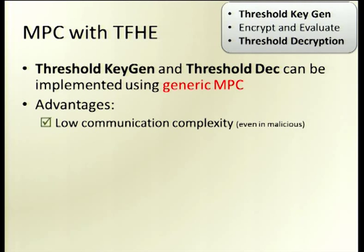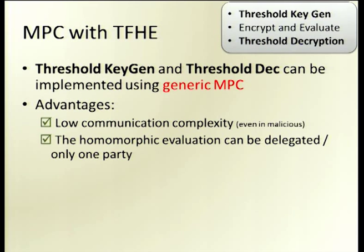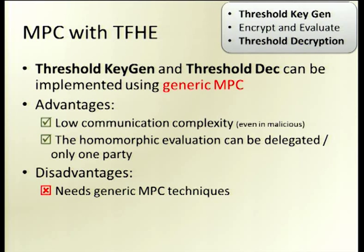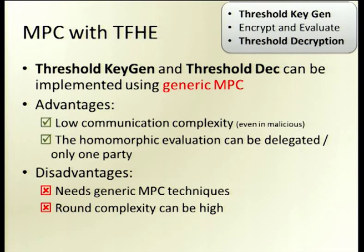This approach already gives us several advantages: low communication complexity independent of the function f, and the ability to delegate homomorphic evaluation to a cloud for low computation. However, there are disadvantages: we need to use the heavy machinery of general MPC techniques like GMW and zero knowledge at each step. In addition, round complexity can be very high — since we use generic MPC, we can do it in constant rounds, but the constants may not be nice to work with.